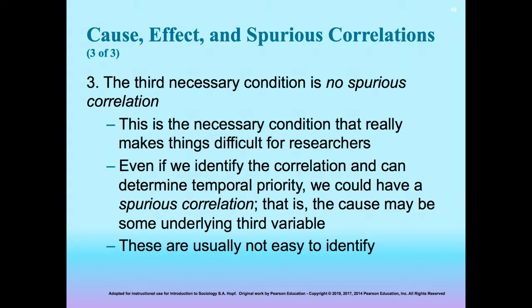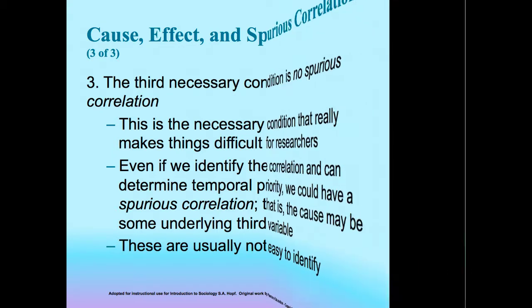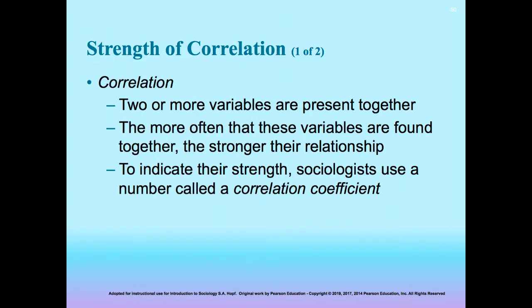There could be a third variable that's not identified or tested for, and for which no control group has been established. This makes social research very problematic. Researchers will also establish the strength of the relationship through determining the correlation coefficient, which helps determine just how strong the relationship between the two variables is. This is a statistical measure used for quantitative data.